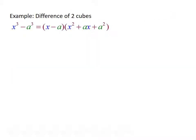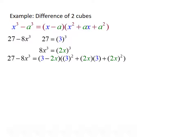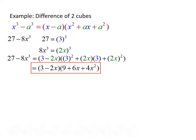Now let's try an example with the difference of two cubes. The formula is x cubed minus a cubed equals x minus a times x squared plus ax plus a squared. For this example we have 27 minus 8x cubed. 27 can be written as 3 cubed and 8x cubed can be written as 2x quantity cubed, so 3 is our x value and 2x is our a value. Plugging into the formula gives us 3 minus 2x times 9 plus 6x plus 4x squared.